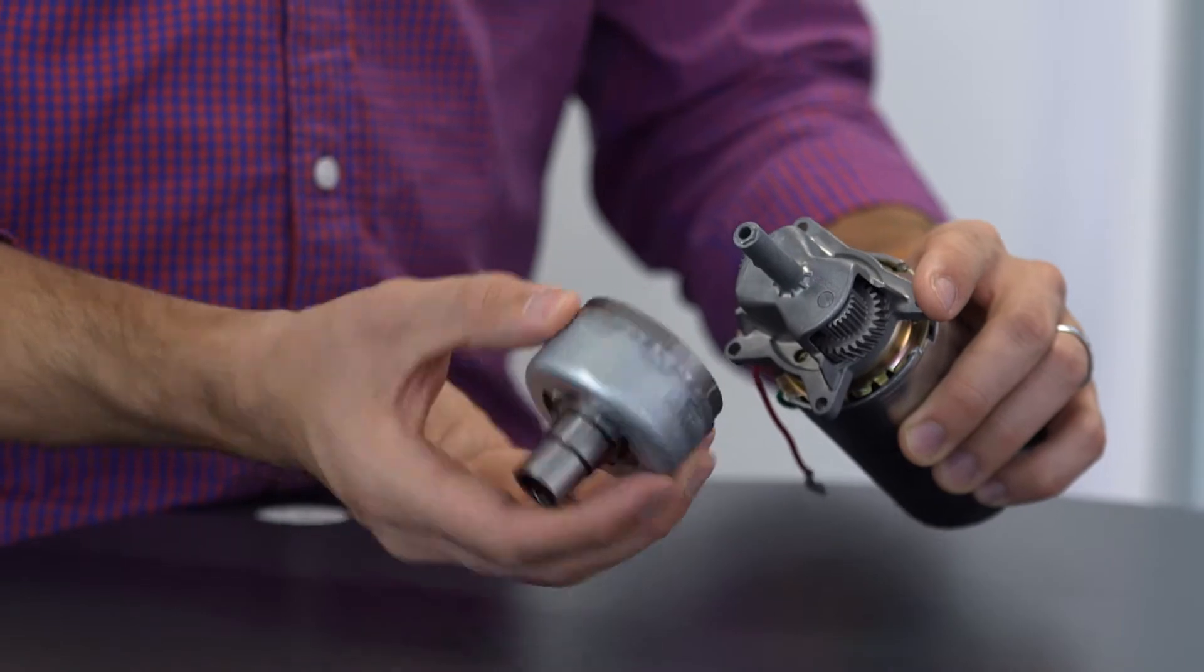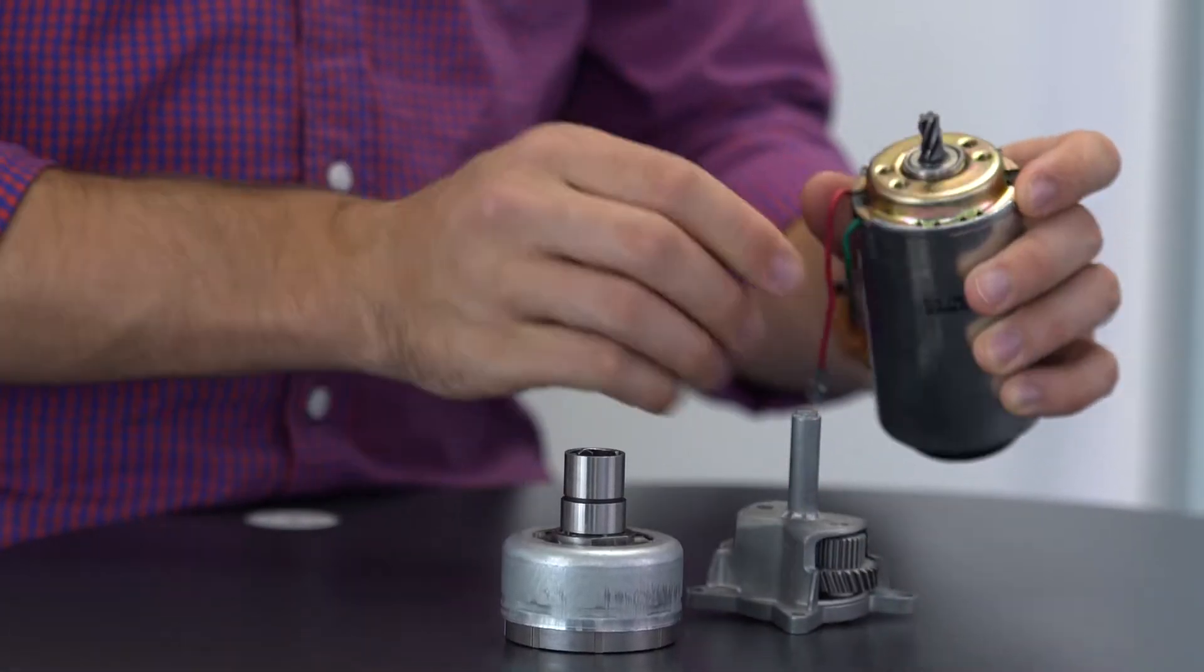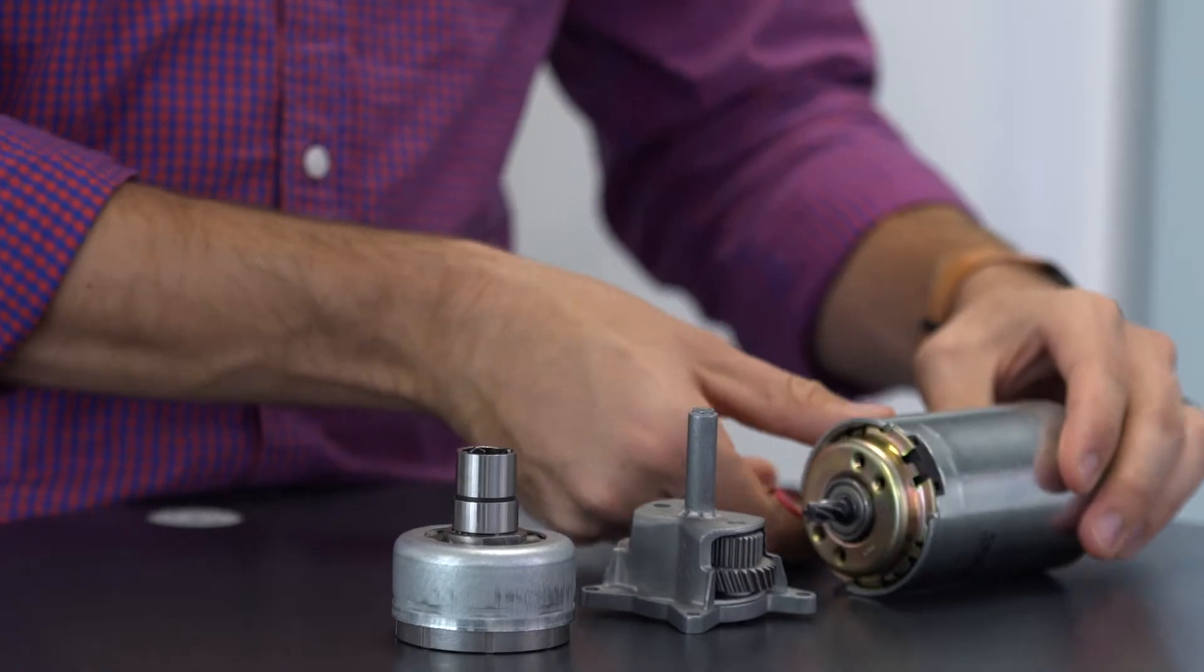The full assembly of the clutch, planetary gear, and DC motor looks like this.